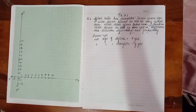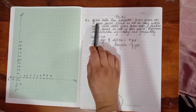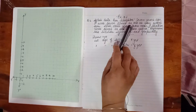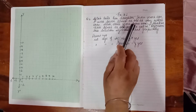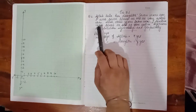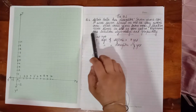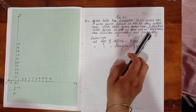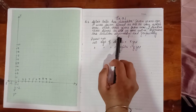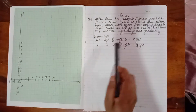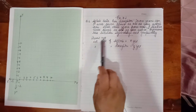Welcome to Math Helpers. We are doing Exercise 3.1 of NCERT, Question number 1. Aftab tells her daughter: seven years ago I was seven times as old as you were then. Also, three years from now I shall be three times as old as you will be. Represent the situation algebraically and graphically.